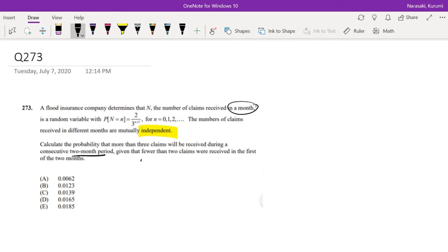So I'm going to assign, I'm going to say n1 is the first month and n2 is the second month. So they're saying calculate the probability that more than three claims will be received during month 1 plus month 2 should be more than three claims, given that the first month had less than two claims.